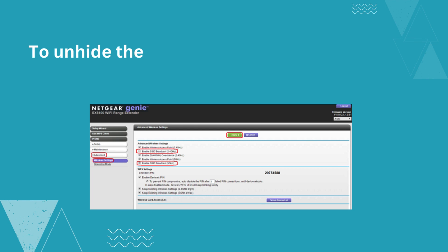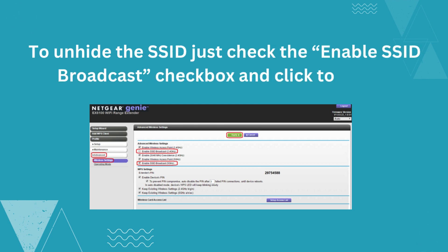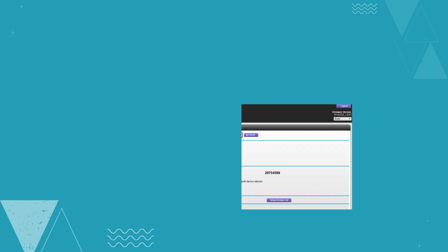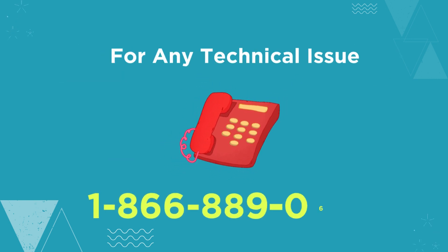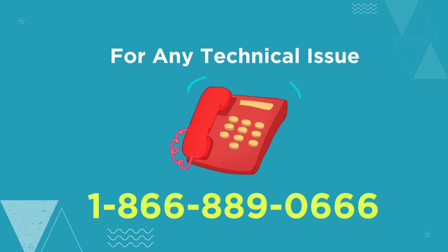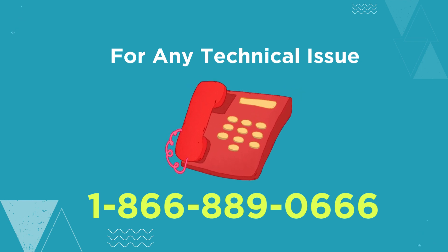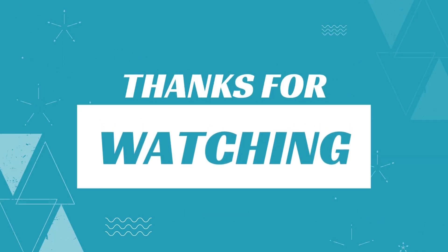To unhide the SSID, just check the Enable SSID Broadcast checkbox and click Apply. See you next time.